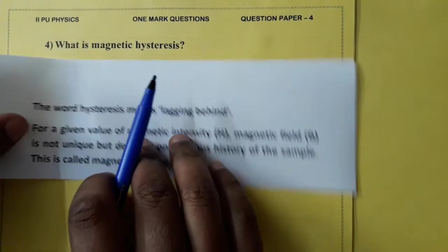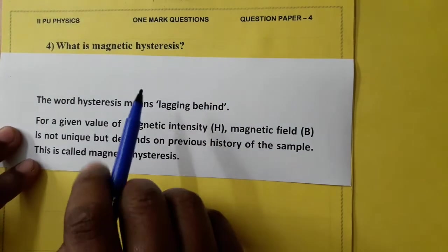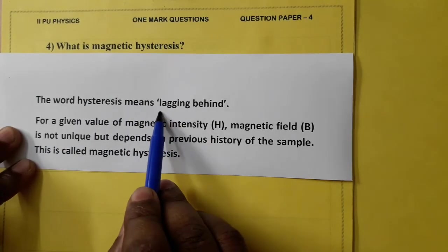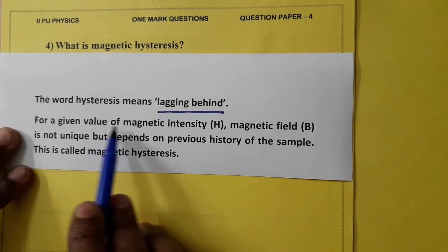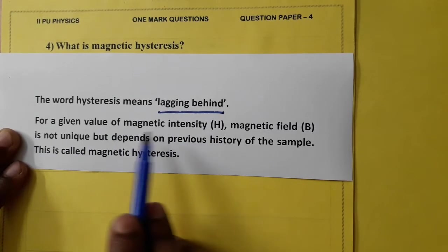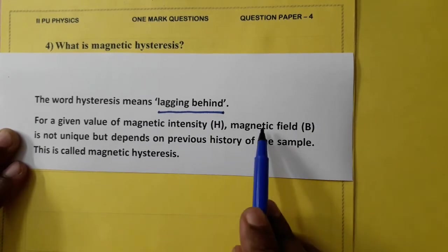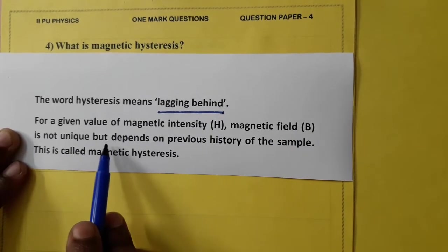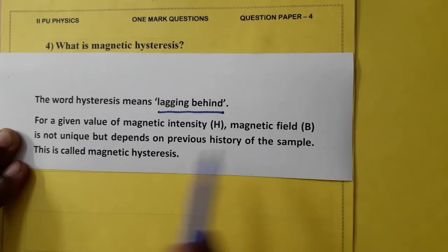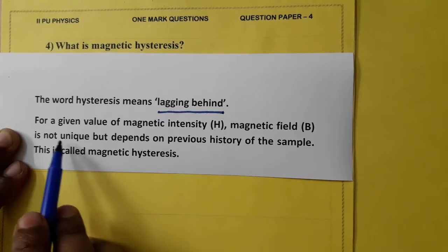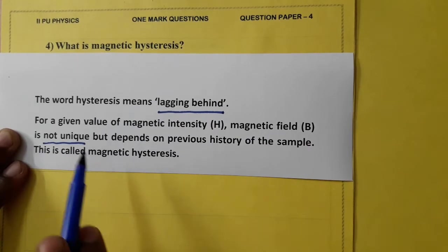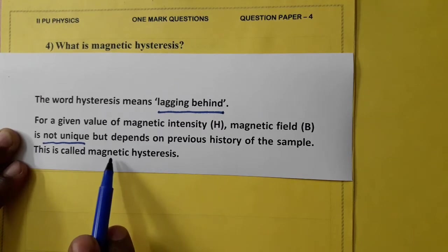What is magnetic hysteresis? The word hysteresis means lagging behind. Of course, we have to continue. For a given value of magnetic intensity H, magnetic field is not unique but depends on the previous history of the sample. This is called magnetic hysteresis. Let me repeat. For a given value of H, B is not unique and it depends on history of the specimen. This is called magnetic hysteresis.